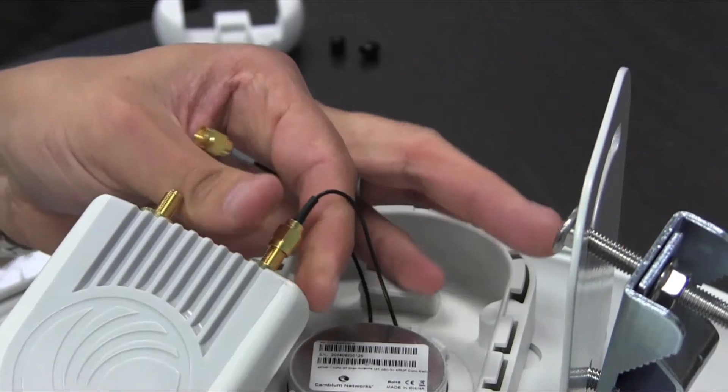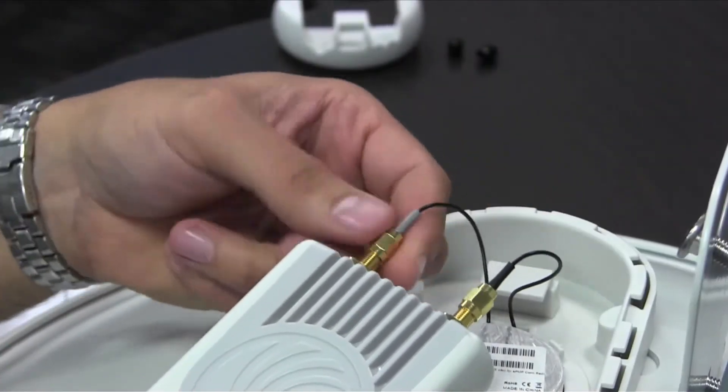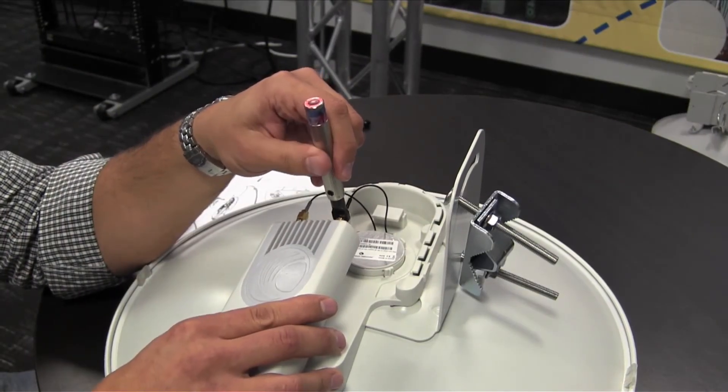Attach the black cable to the right side and the gray cable to the left side. Tighten the SMA connector to 1 Nm.